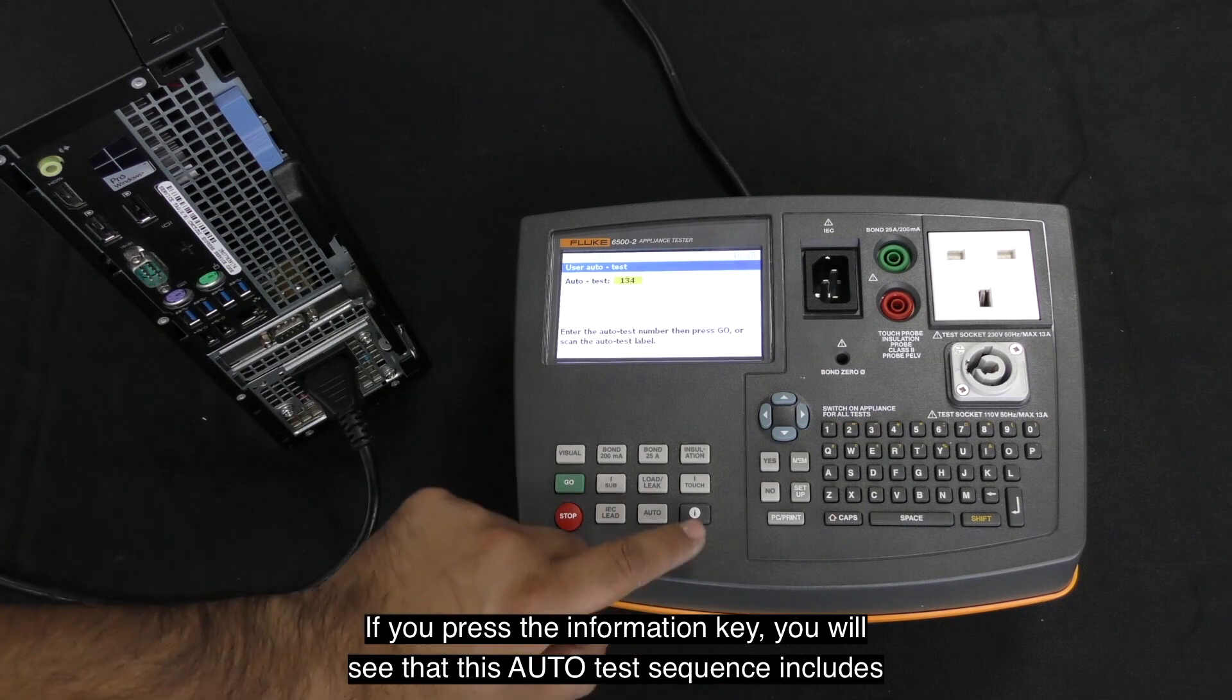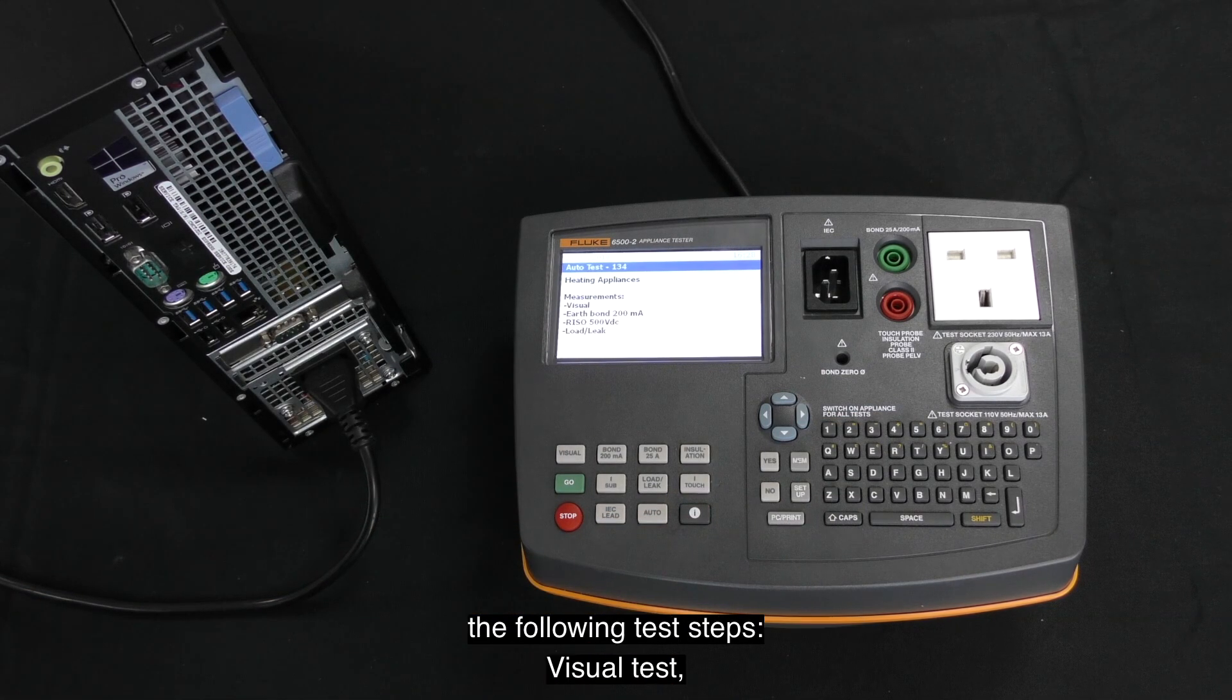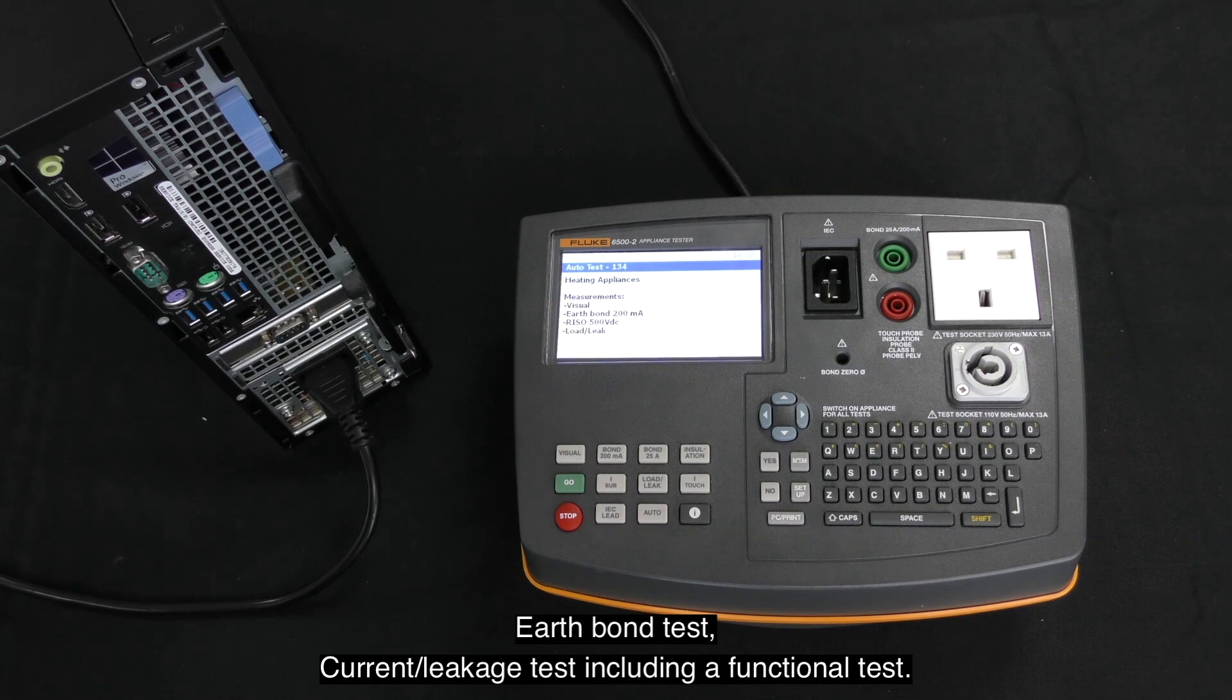If you press the information key, you will see that this auto test sequence includes the following test steps: visual test, earth bond test, current and leakage test, including a functional test.